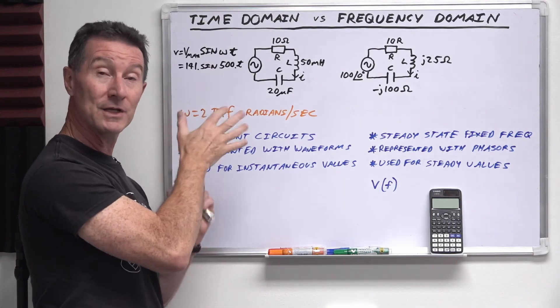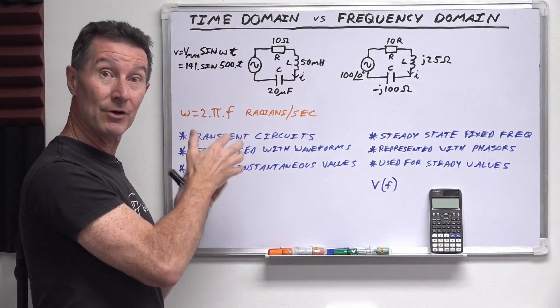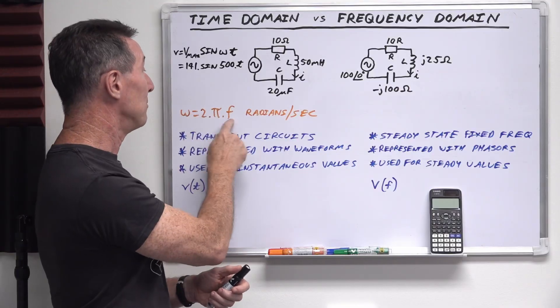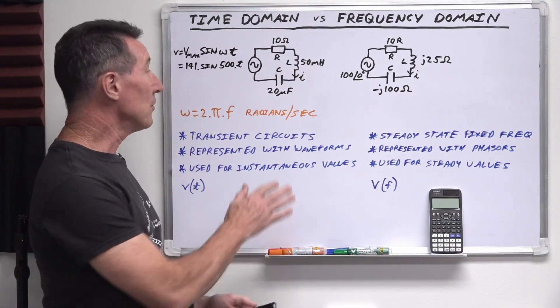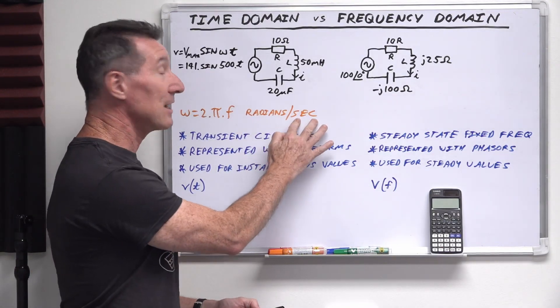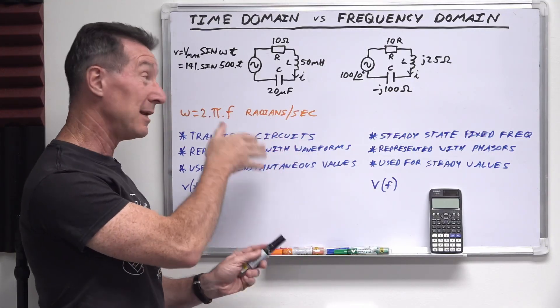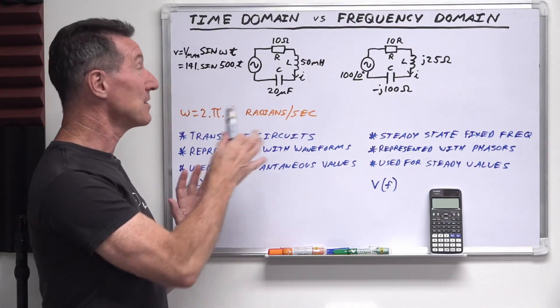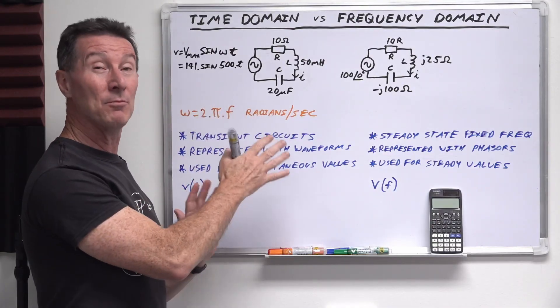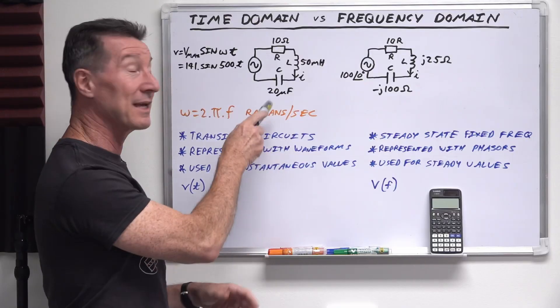Now, omega, of course, is lowercase Greek letter omega, and that means 2 pi f. And the units for that are in radians per second, which is not an angular velocity. It's actually an angular frequency in AC circuit analysis, as opposed to maths, which you might call an angular velocity. But that's not the case here.